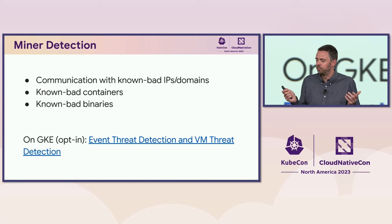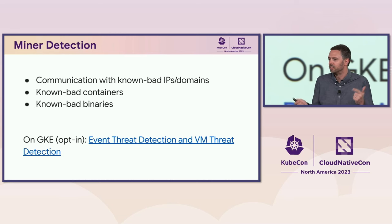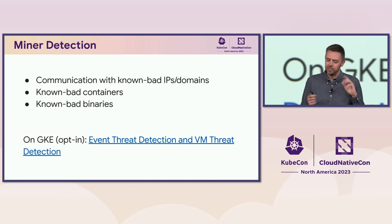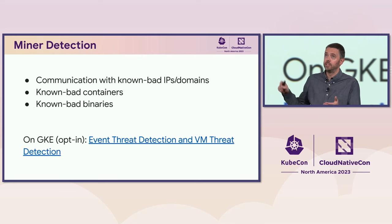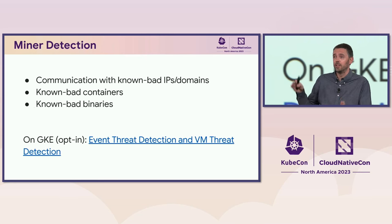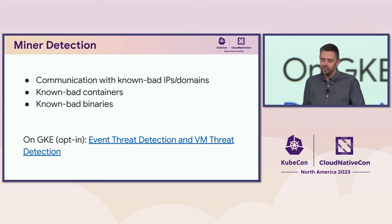The second detection category is exploitation detection — what did the attacker actually do on the cluster? We can look at system:anonymous activities; if the anonymous activity is actually authorized, that's probably bad and a reasonable signal. We can also look at certificate creation work the attacker was doing. There's some system use for the CSR API, so you may need to filter out what your provider does — for instance, GKE issues certificates to Kubelets through this mechanism. For detecting crypto miners specifically, typical techniques include bad IPs, bad domains, the container images and binaries. On GKE, we have event threat detection looking at logs, and if you opt in, VM Threat Detection can scan memory of the VM from outside the hypervisor to find a crypto miner running in memory without requiring an agent.